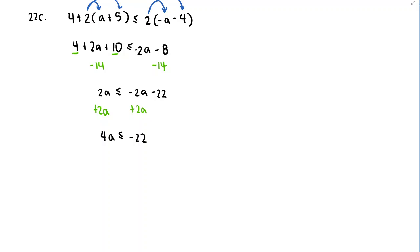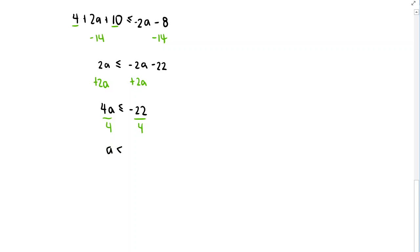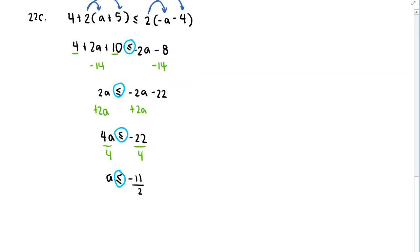Dividing both sides by 4 — a positive number, so the inequality sign stays the same — we get a ≤ −22/4, which reduces to a ≤ −11/2. Notice I kept the inequality symbol throughout; I didn't write an equal sign. Since we never multiplied or divided by a negative, the sign didn't need to reverse.